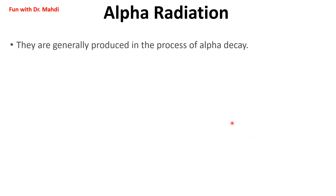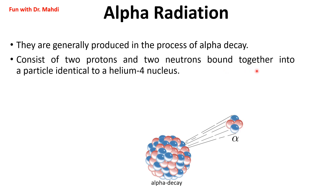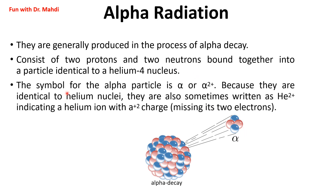First, I would like to start with alpha radiation. They are generally produced in the process of alpha decay. As you can see in this picture, it has two protons and two neutrons bound together into a particle identical to a helium-4 nucleus. The symbol for alpha particle is alpha, or alpha-2+, because it has two positive charges.